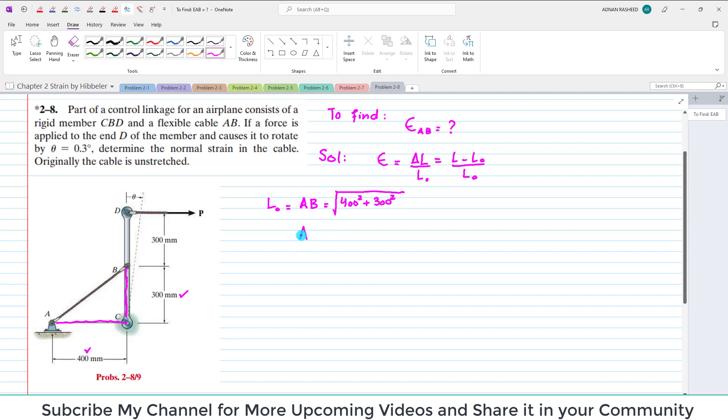This will give you the original length of AB, which is equal to L0, and that is equal to 500 millimeters.